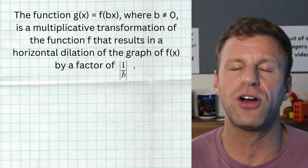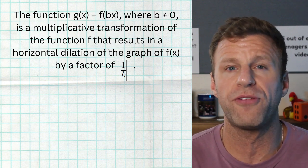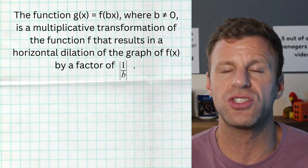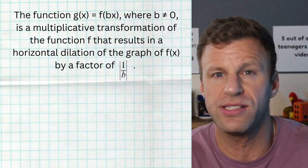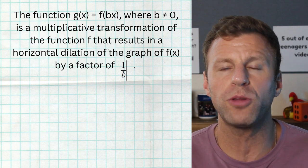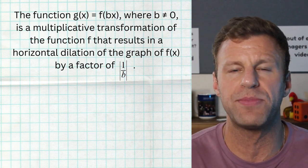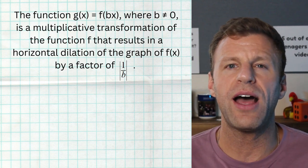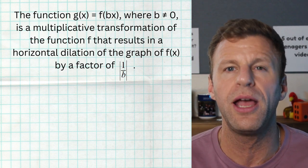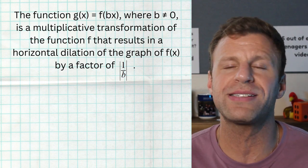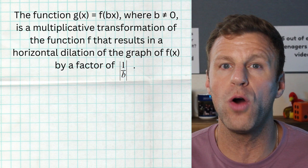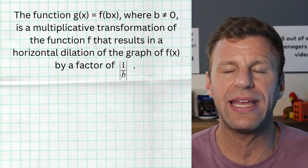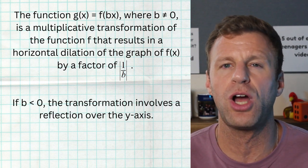So if we have a function g of x, and that function is defined as f of b times x — so inside of our function, we have something times x, generically we're just calling it b. This is a sign of what we call a multiplicative transformation, because we're multiplying our function by a value. But if that value is happening inside of our function — b times x — then we have what's known as a horizontal dilation. Now this is going to stretch or compress us horizontally by a factor of one over b. Actually it's the absolute value of one over b, because if b is also negative, the negative is simply a reflection across the y-axis.